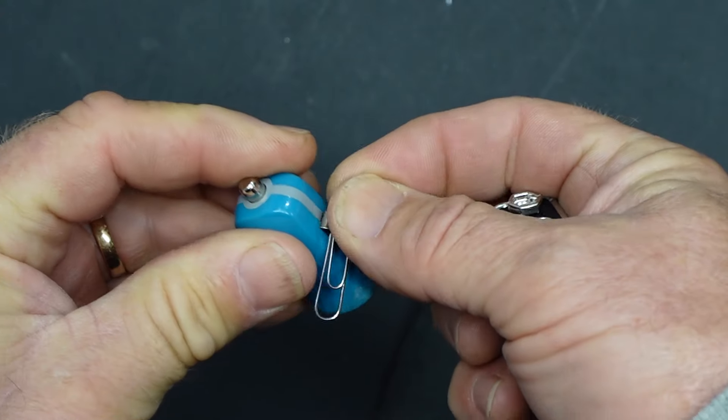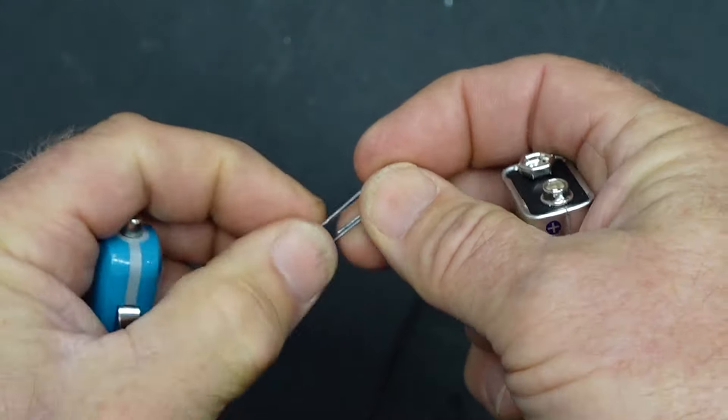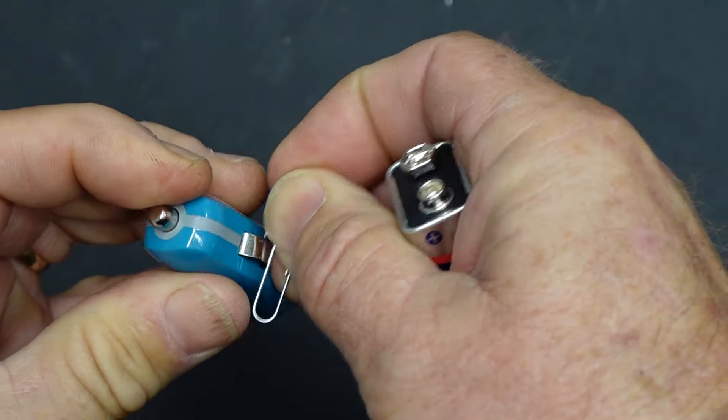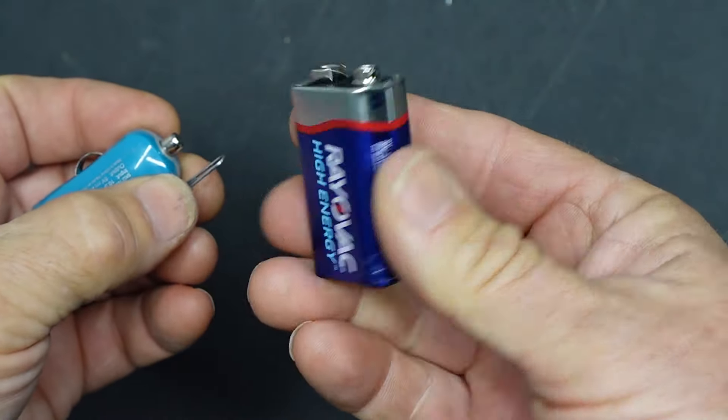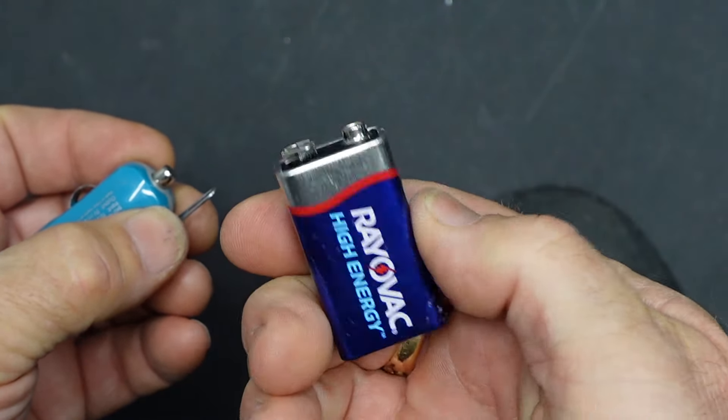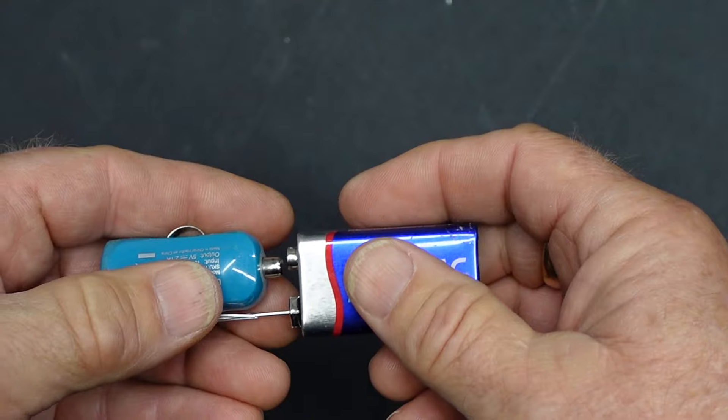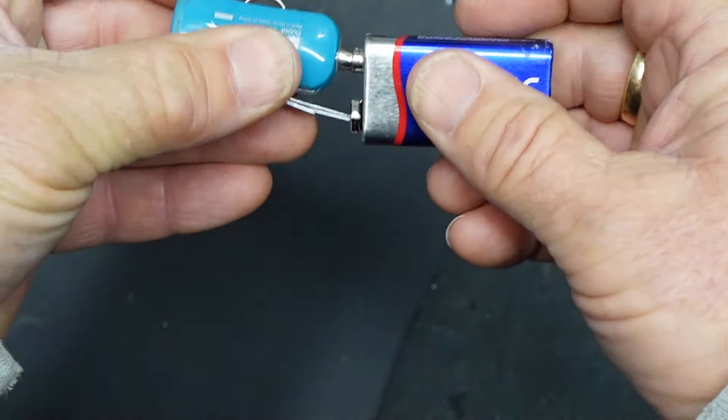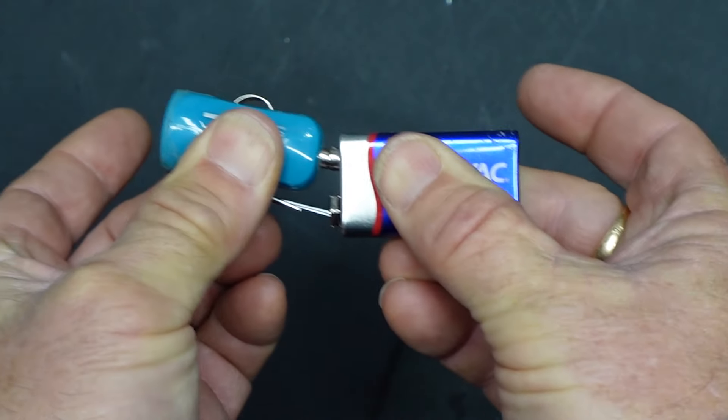With the paper clip, just slip it into the negative side on your charge plug. Positive side of the nine volt battery, which is the smaller post, push that onto the center of the charge port of the plug and there you've got a charger for your cell phone.